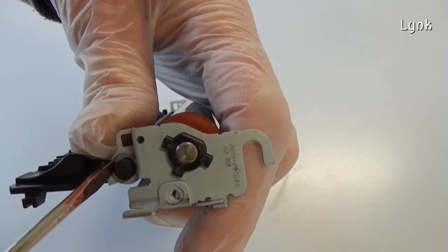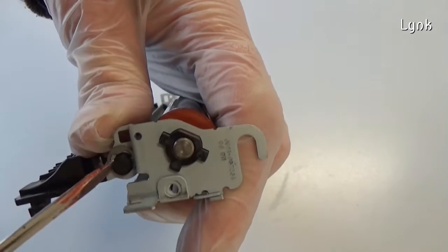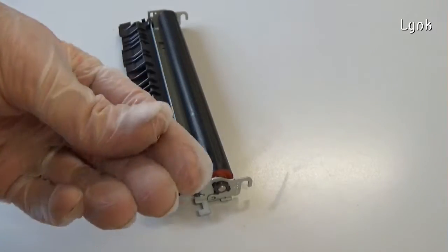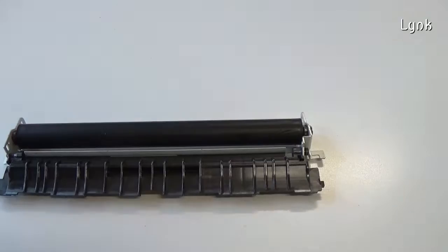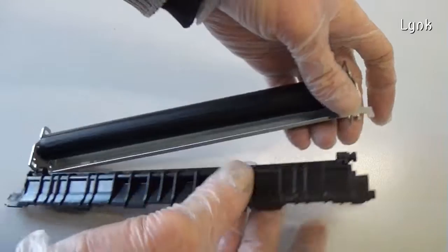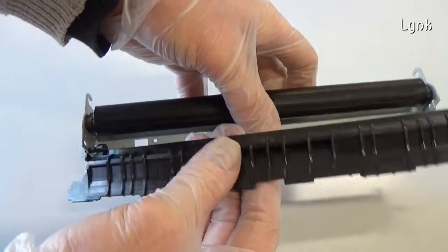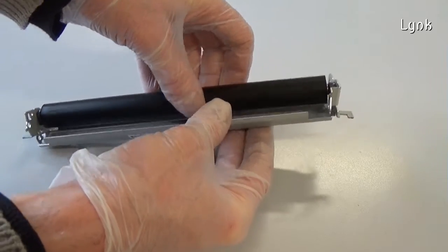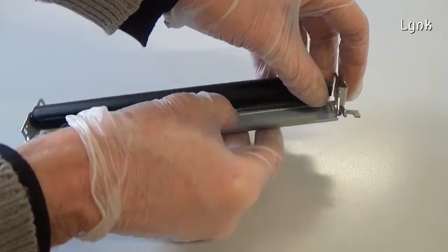Remove the metal pin. Remove the fuser cover. You can now remove the lower fuser roller with the bushings.